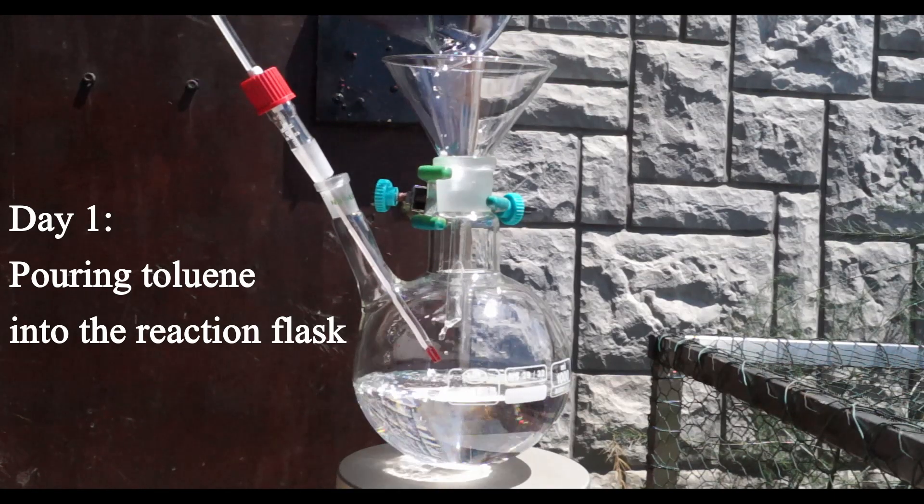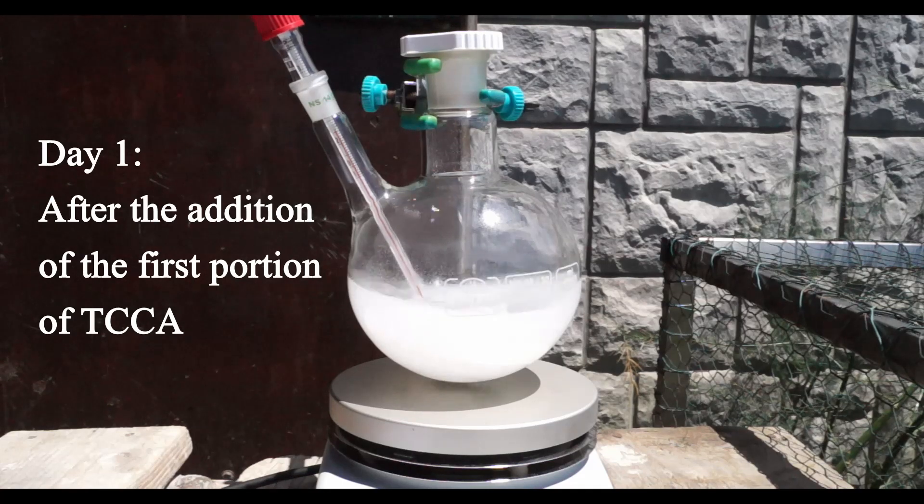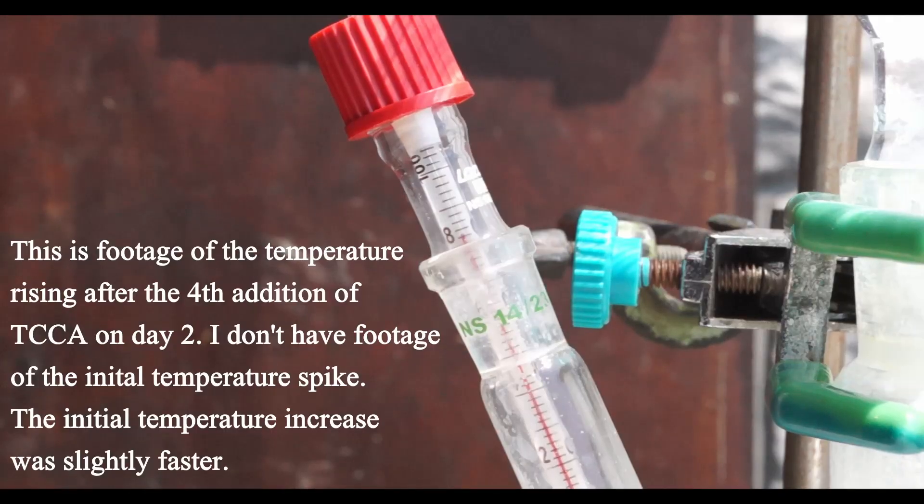I poured 400 ml of toluene into the reaction flask. I then turned on the stirring and added the first approximately 25 gram portion of TCCA. After adding the first portion of TCCA, for a while nothing happened, but then without warning the reaction started, and by the rate at which the temperature was rising, it was obvious that the reaction is quite exothermic, or in other words, it produces a lot of heat.